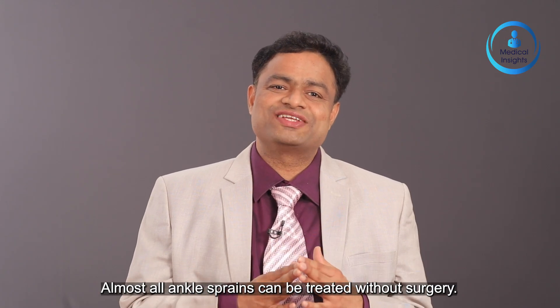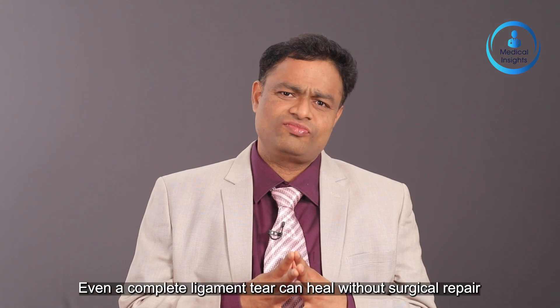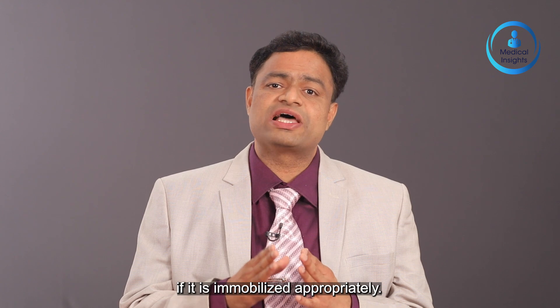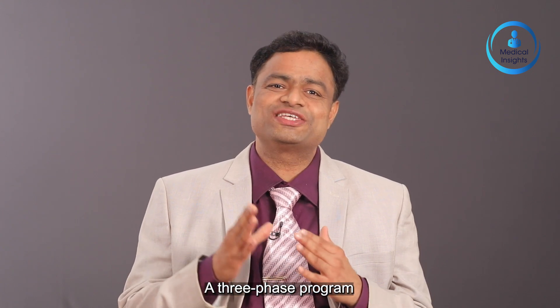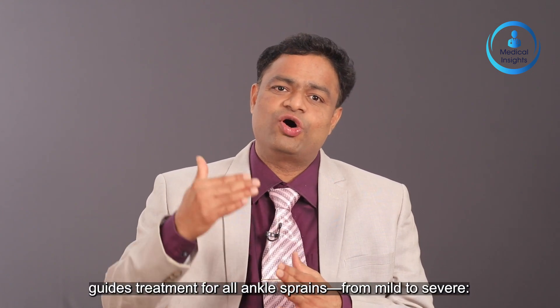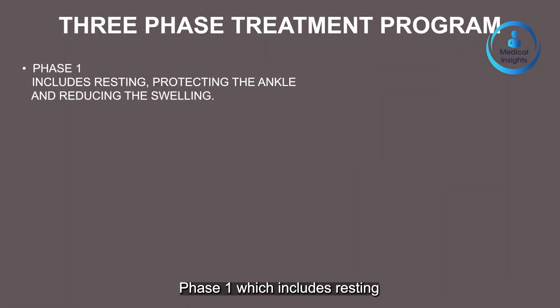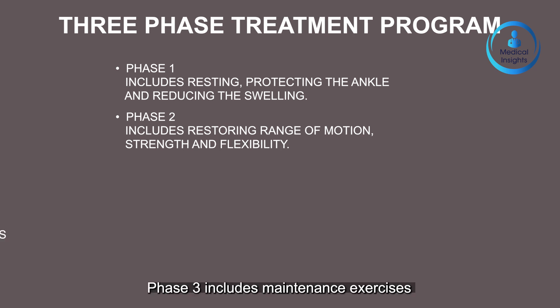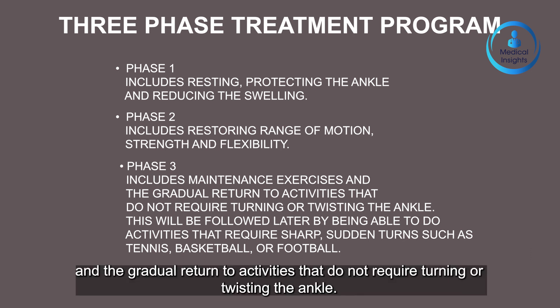Almost all ankle sprains can be treated without surgery. Even a complete ligament tear can heal without surgical repair if it is immobilized appropriately. A three-phase program guides treatment for all ankle sprains from mild to severe. Phase 1 includes resting, protecting the ankle and reducing the swelling. Phase 2 includes restoring range of movement, strength and flexibility. Phase 3 includes maintenance exercises and gradual return to activities that do not require turning or twisting the ankle.